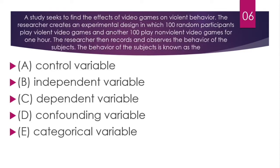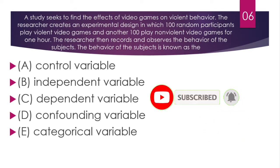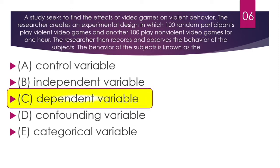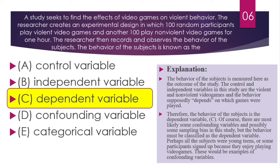Question number 6. A study seeks to find the effects of video games on violent behavior. The researcher creates an experimental design in which 100 random participants play violent video games and another 100 play non-violent video games for one hour. The researcher then records and observes the behavior of the subjects. The behavior of the subjects is known as the dependent variable — the correct option is C. The behavior is what we measure, while the type of video games (violent vs. non-violent) is the independent variable.